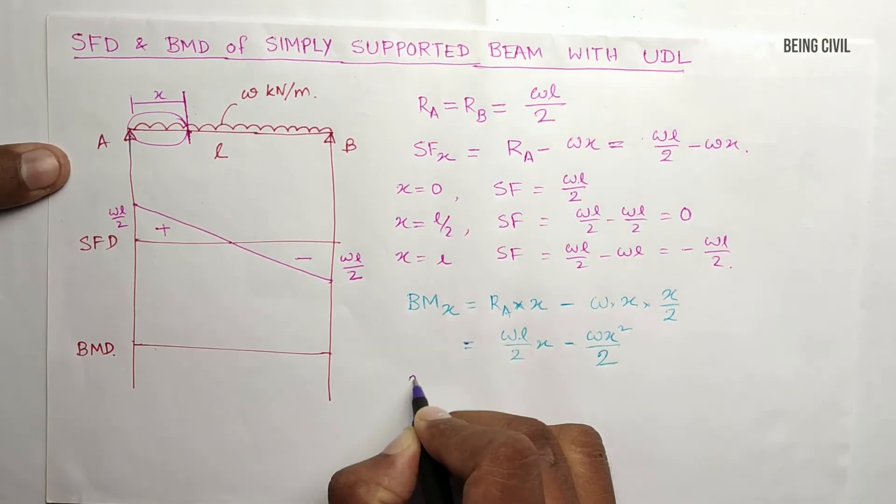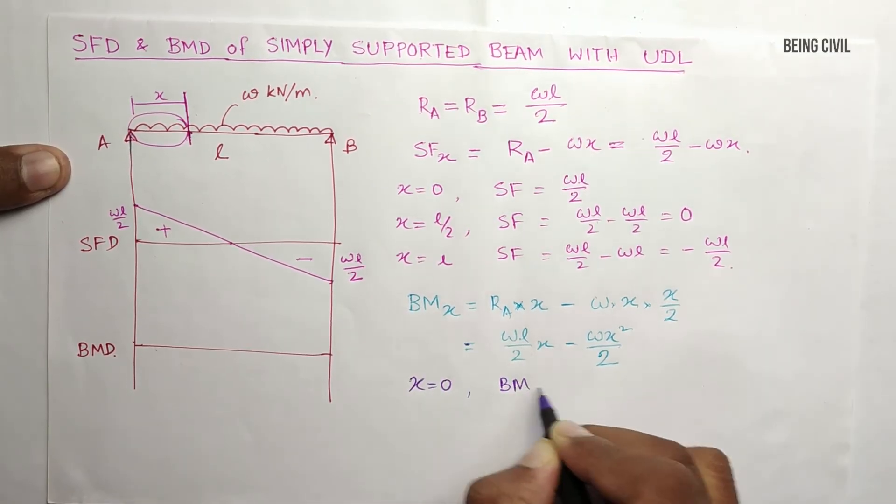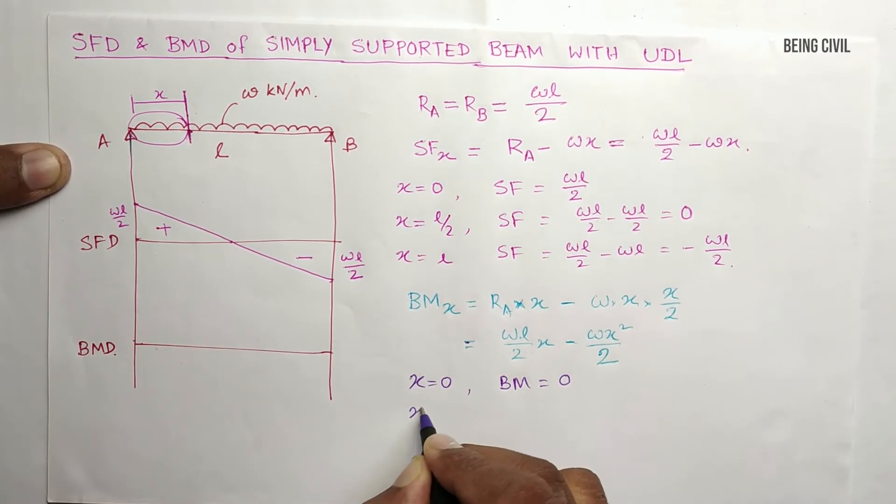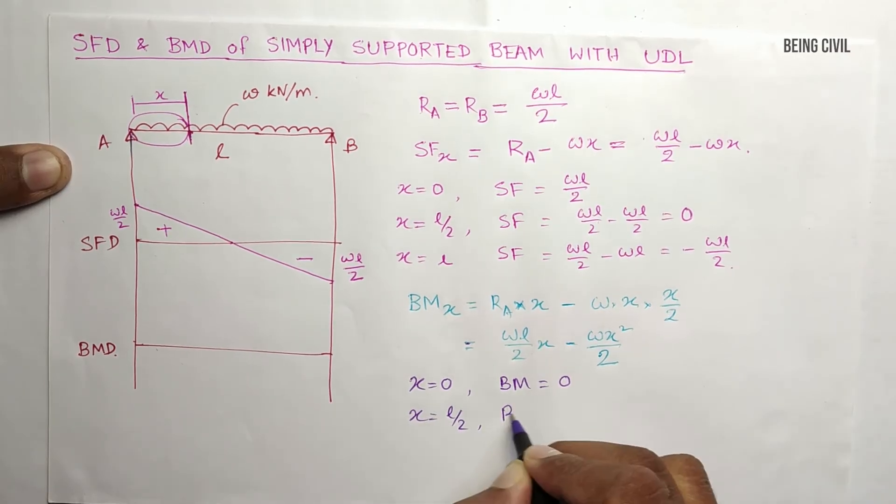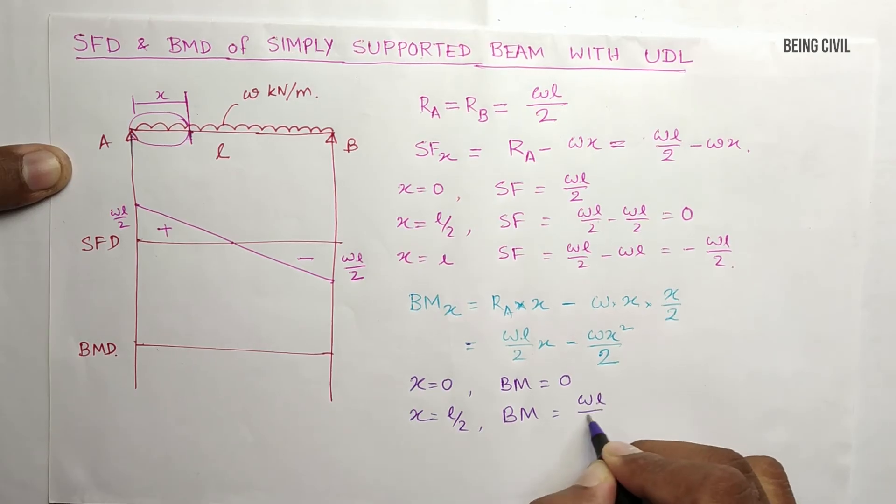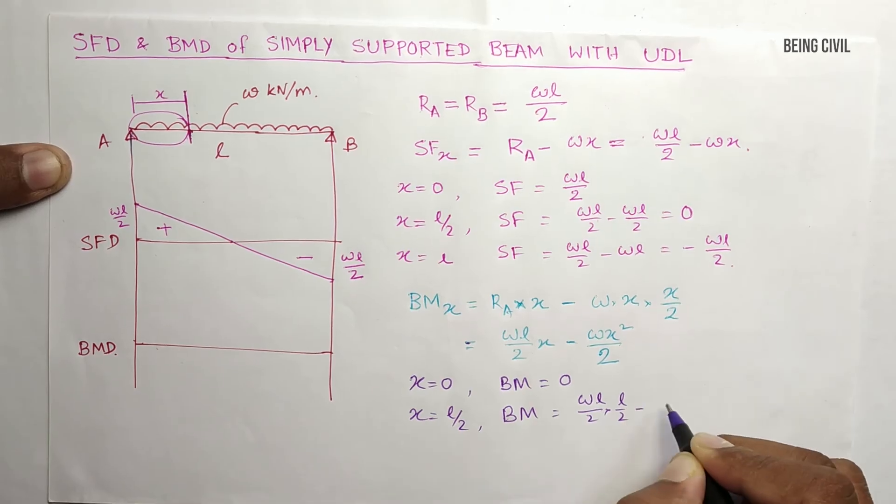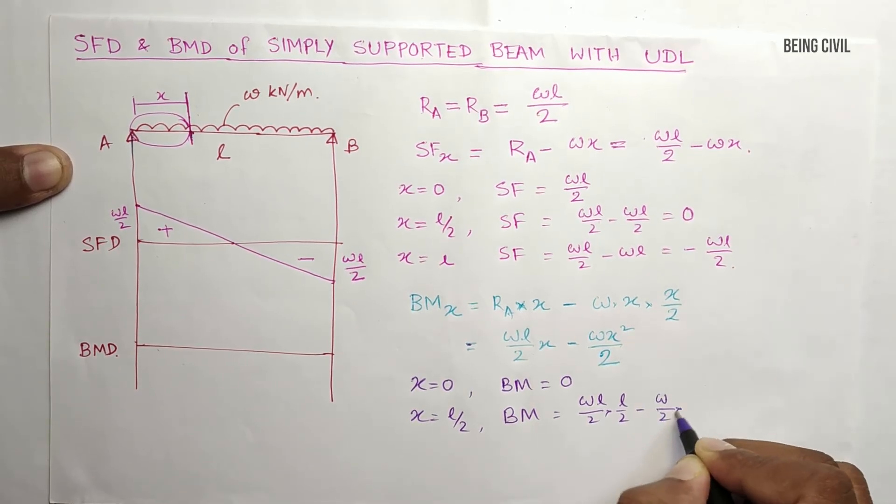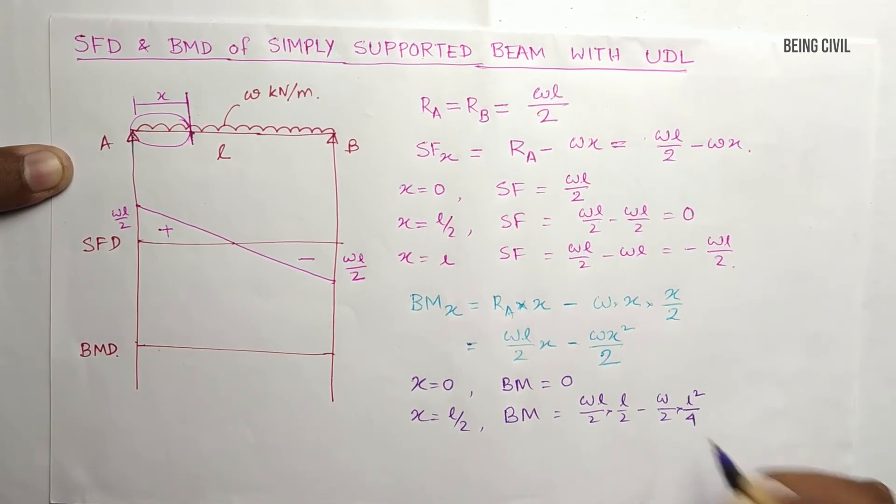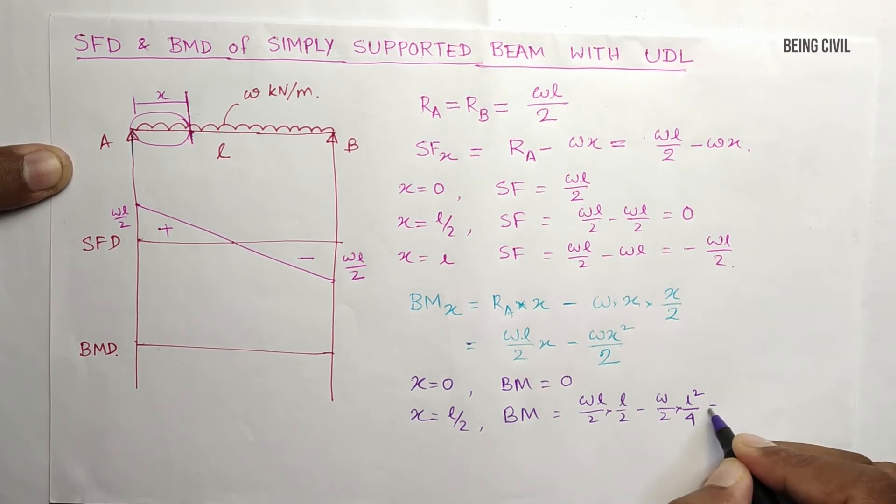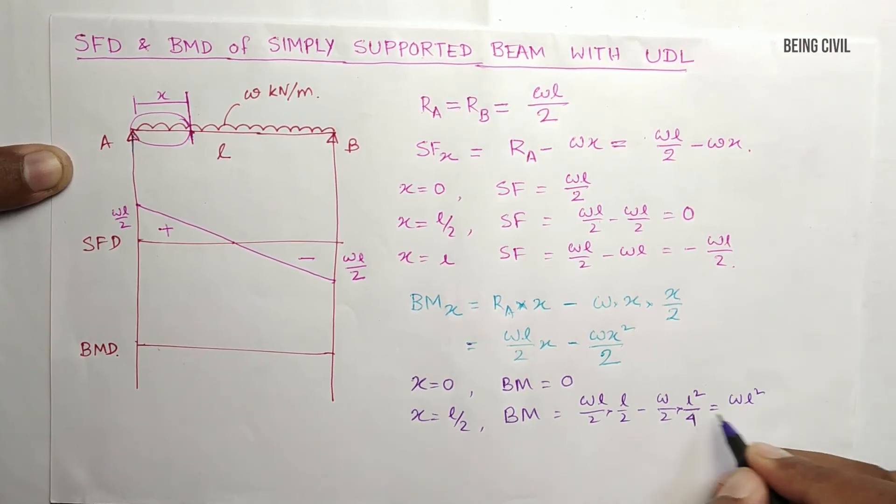At X equals 0, bending moment is 0. At X equal to L by 2, bending moment is WL by 2 into L by 2 minus W into L square by 4, so you get WL square by 4 minus WL square by 8 equals WL square by 8.